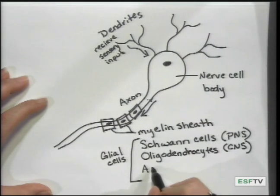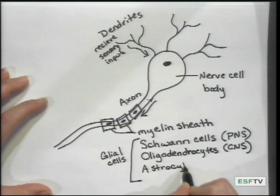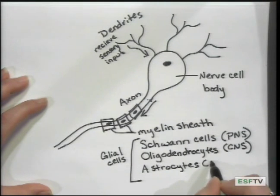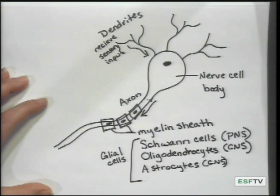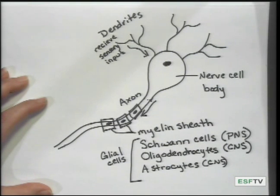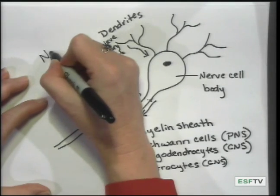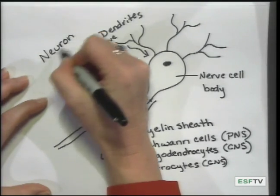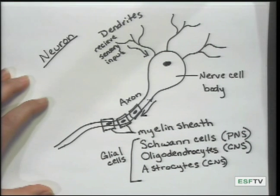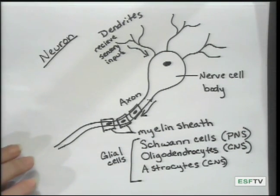Also found in the central nervous system are astrocytes. Astrocytes are neural glial cells that facilitate nutrient transfers and ion reservoirs, again within the central nervous system. So this is a neuron, and it is the basic unit of the nervous system.